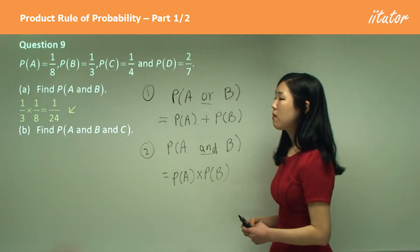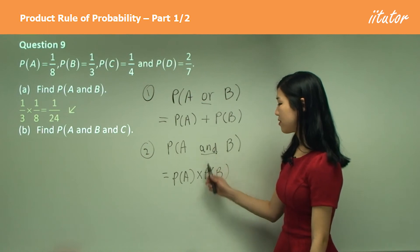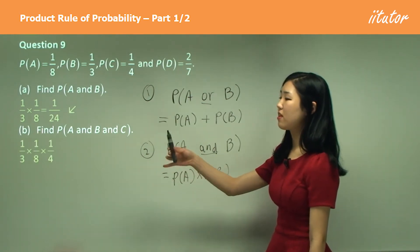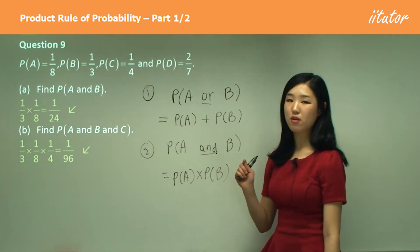Now B, probability of A and B and C, so it's and, so we multiply. So we simply multiply the probabilities A, B and C, just like that. And you can calculate that to get one on 96.